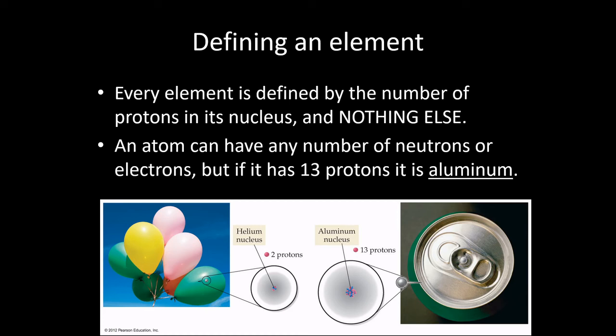So every atom in the universe that has 13 protons in its nucleus, we define to be aluminum. That is aluminum. Anything that has 13 protons. We don't care how many neutrons it has. We don't care how many electrons it has. If it has 13 protons, that's aluminum. In the same way that everything that has 2 protons is helium. The number of protons defines the element.